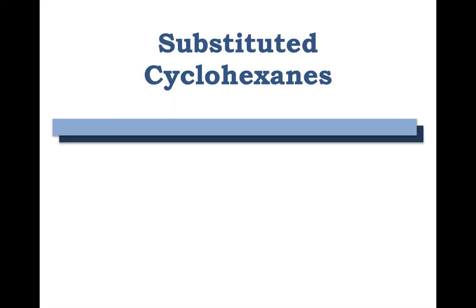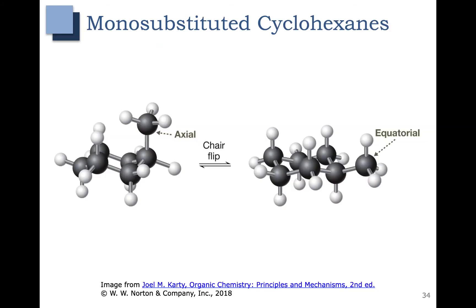In this video, we're going to use what we learned about ring flips of cyclohexane and apply that to substituted cyclohexanes. In this first example, we have a monosubstituted cyclohexane, meaning that it has one group on the cyclohexane ring. This particular example is methylcyclohexane. I've drawn out methylcyclohexane here, and you can see the two chair conformations of methylcyclohexane shown here and here.